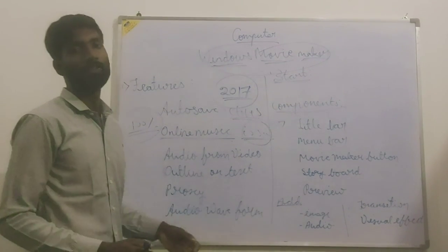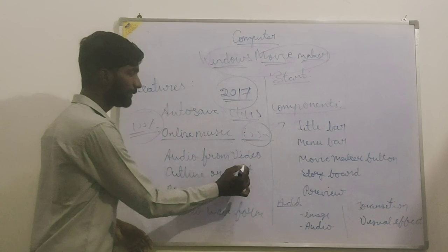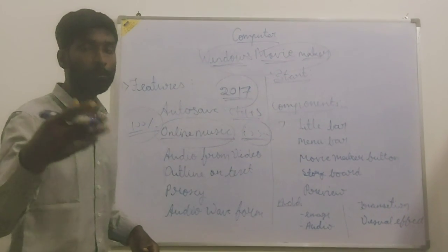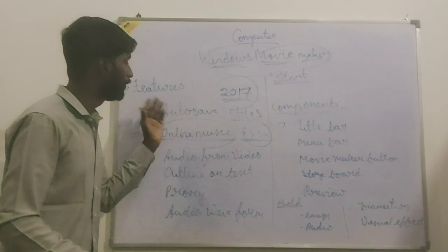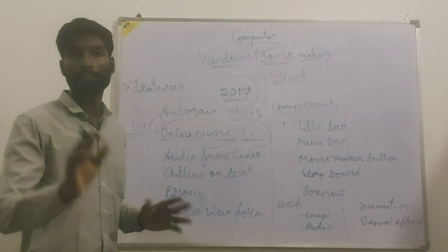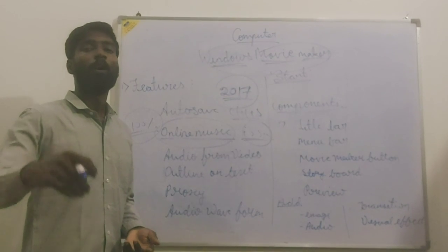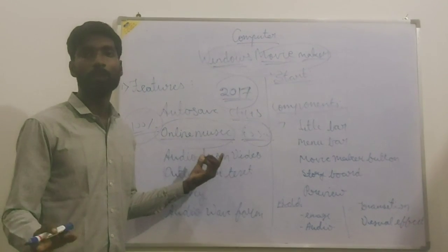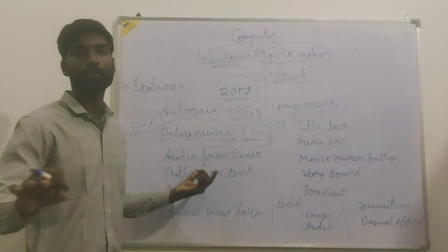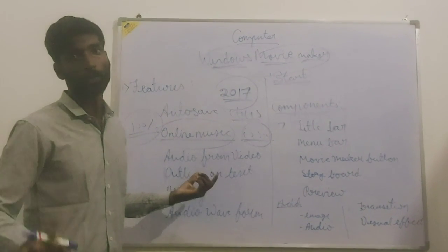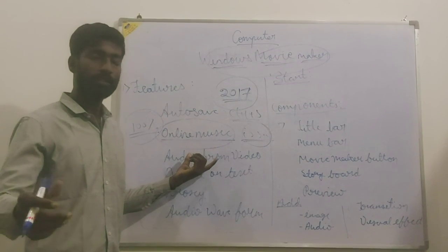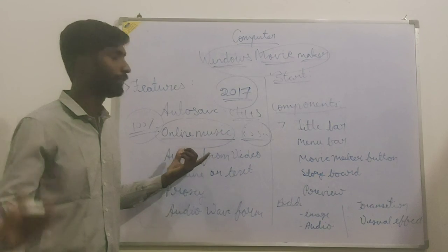But in Windows Movie Maker, online music is available and it is free open-source. However much music you want, you can download it with no copyright issue at all. You can use it, sell it, or do anything with it — it is completely free and no one will question you.